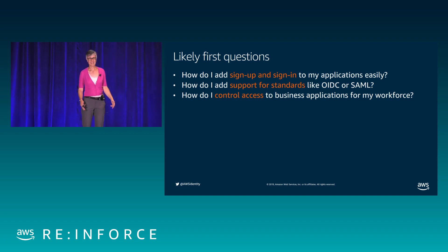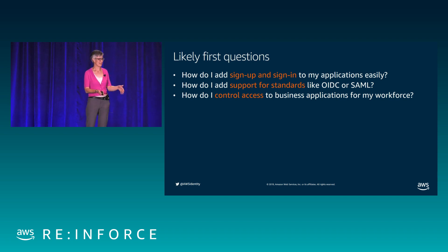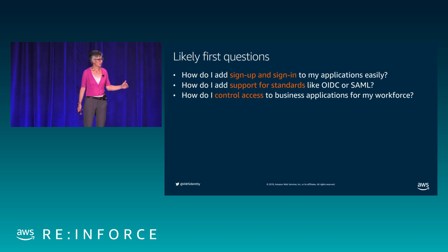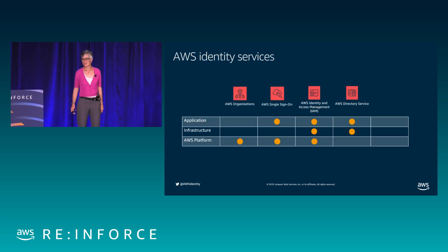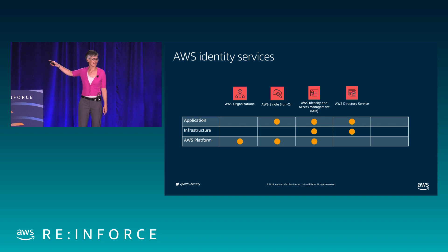Whether you want to get into each service individually and mix and match — perhaps because you have custom use cases or are already halfway through — or whether you say you're at the beginning of your cloud journey and want Control Tower to orchestrate these services for you, both models are great. If you start with Control Tower today and decide you need to customize more, you can go into these individual services and orchestrate in more detail. I'd be happy to stay after and chat with those of you trying to figure out which approach is right for you.